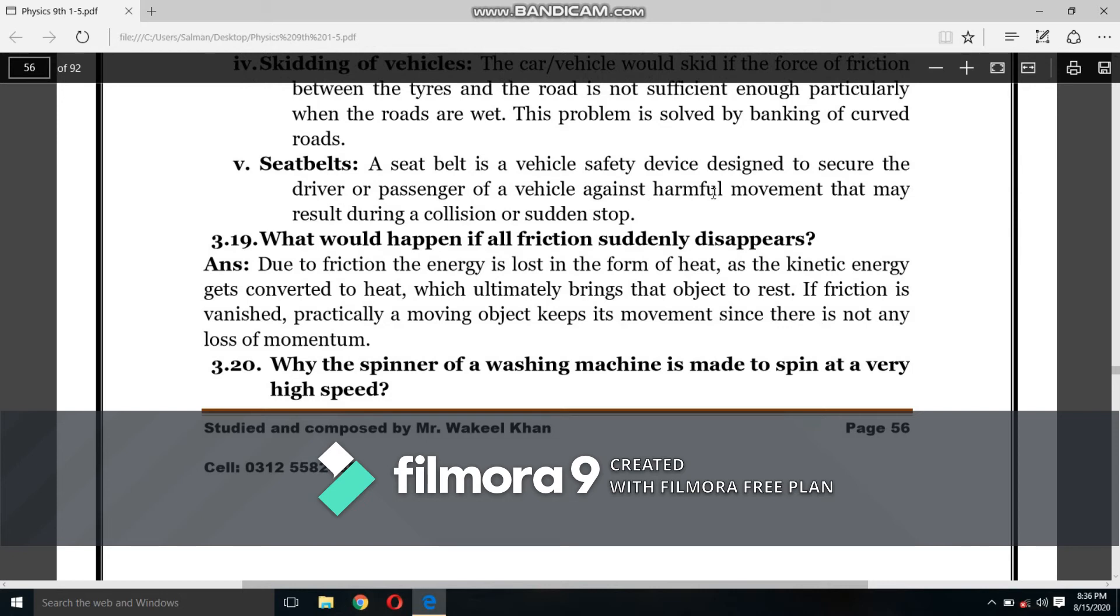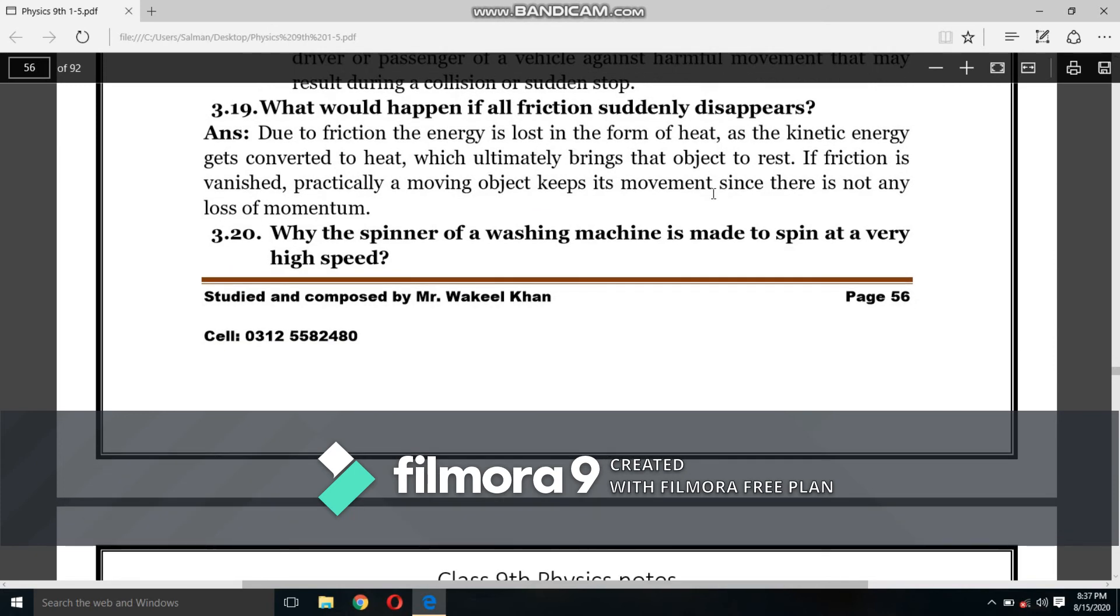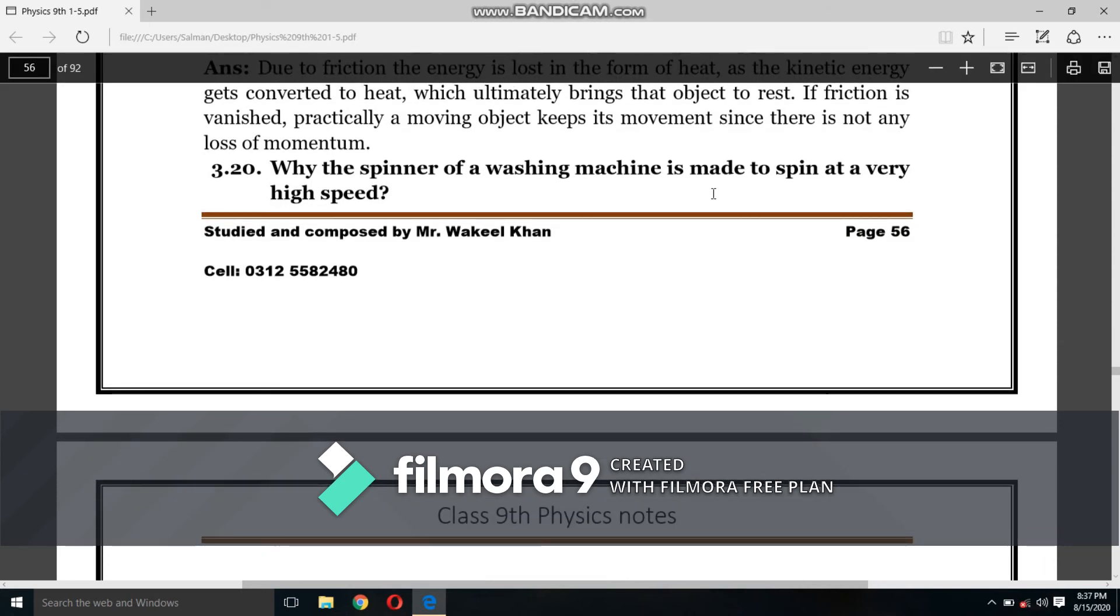What would happen if all friction suddenly disappeared? Due to friction, the energy is lost in the form of heat. As the kinetic energy gets converted to heat, which ultimately brings that object to rest. But when friction is vanished, practically a moving object keeps its movement since there is not any loss of momentum. If we remove the friction, then an object will always move until its momentum is lost.